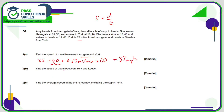The speed of travel between York and Leeds: it's 20 miles and it takes 20 minutes. So 20 divided by 20 comes to 1 mile per minute. All I need to do is multiply that by 60, and that will give 60 miles per hour.